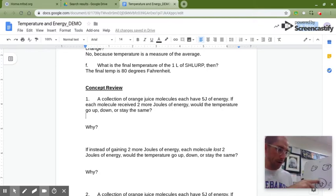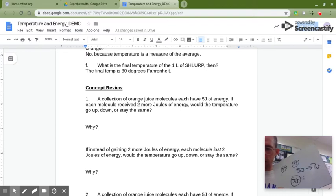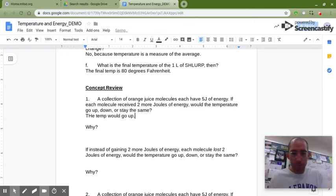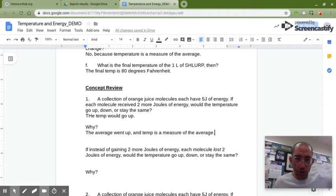Then it goes up by two. So each now has seven. Seven plus seven plus seven divided by three, it doesn't matter, seven. So the average went from five joules to seven joules, so it went up. So if the average goes up, the temp goes up, because the temp is based on the average. Why? Well, because the average went up and temp is a measure of the average. And I want you to make that connection between temperature and average. Whatever the average does, the temperature does.